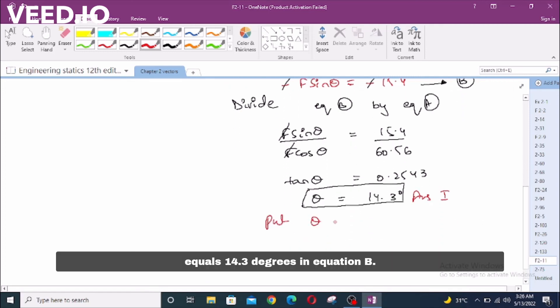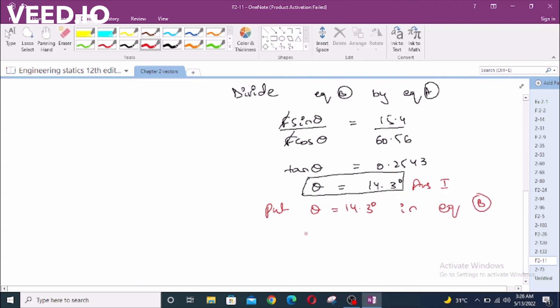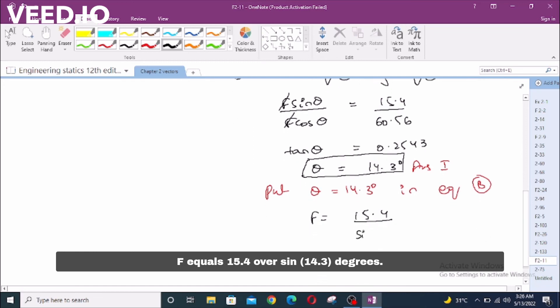F equals 15.4 over sine 14.3 degrees. F equals 62.35 lb. This is our second answer.